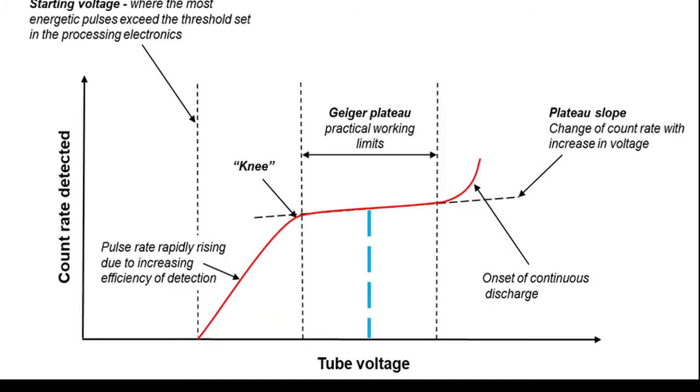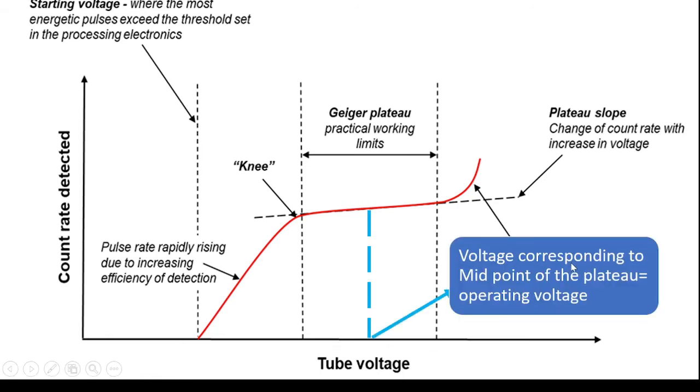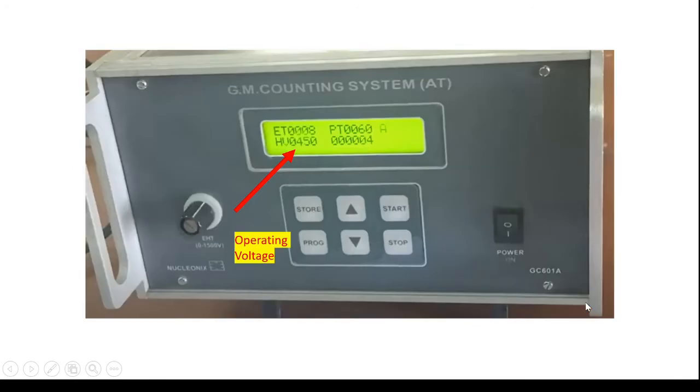Now every GM counter will have a characteristic curve which is represented in this particular diagram. This part which is basically the midway through the plateau length is going to be corresponding to a voltage which is going to be called as the operating voltage. So in the GM counter system which we are using, the operating voltage is set here which you will be able to see as 450 volts.